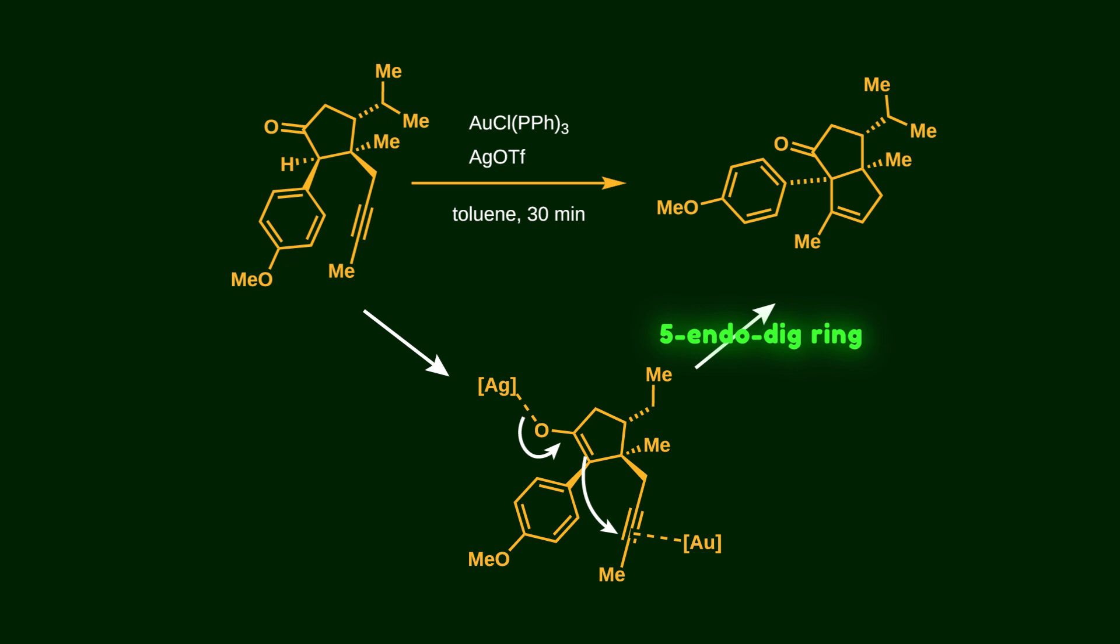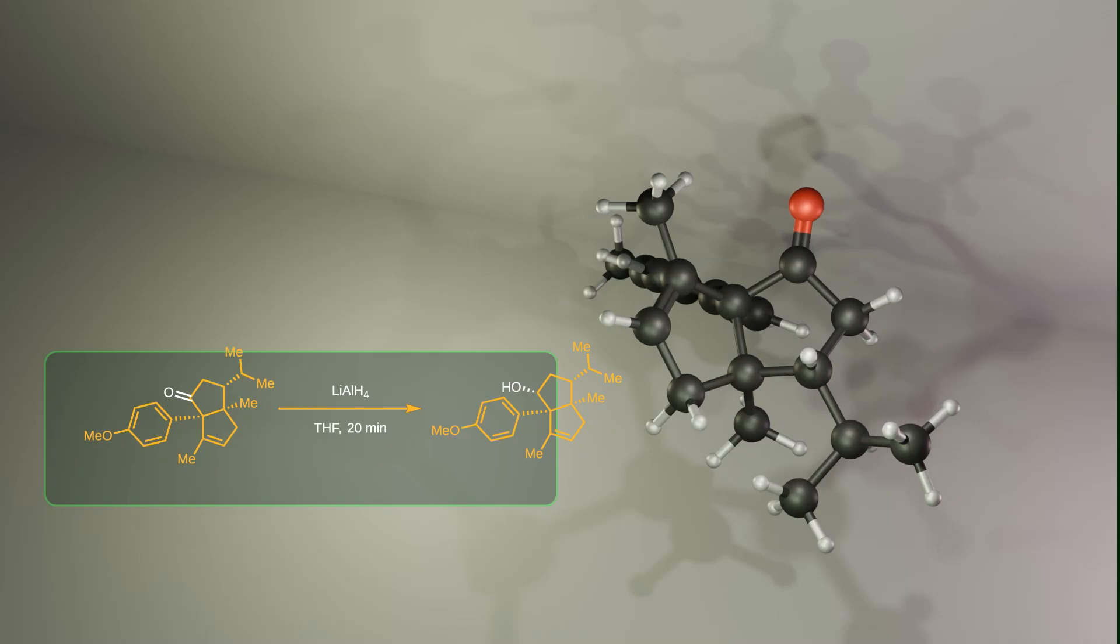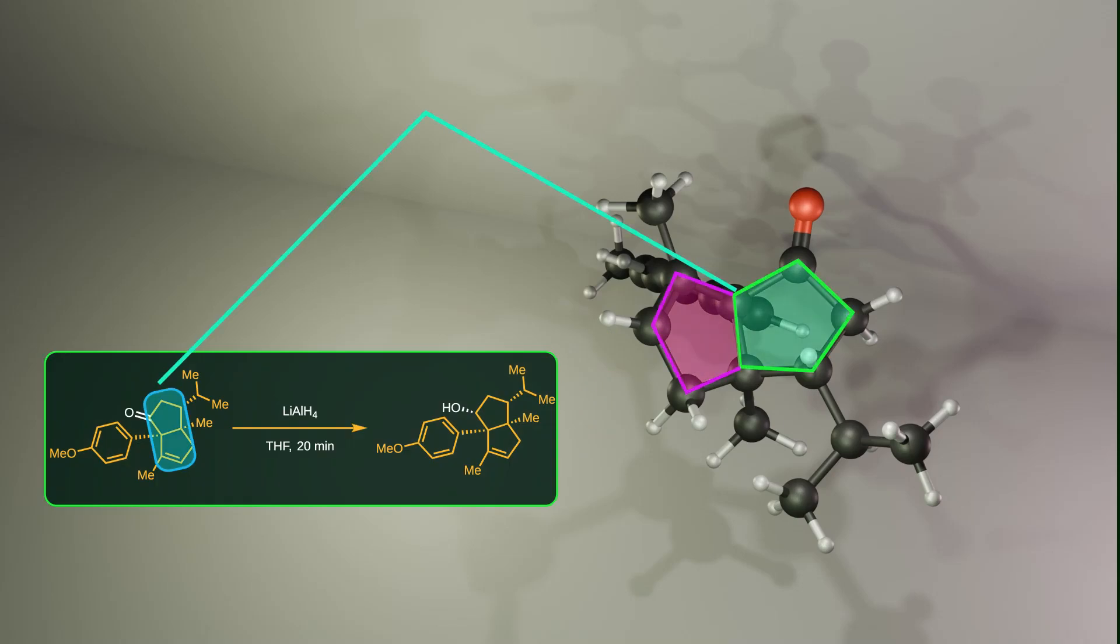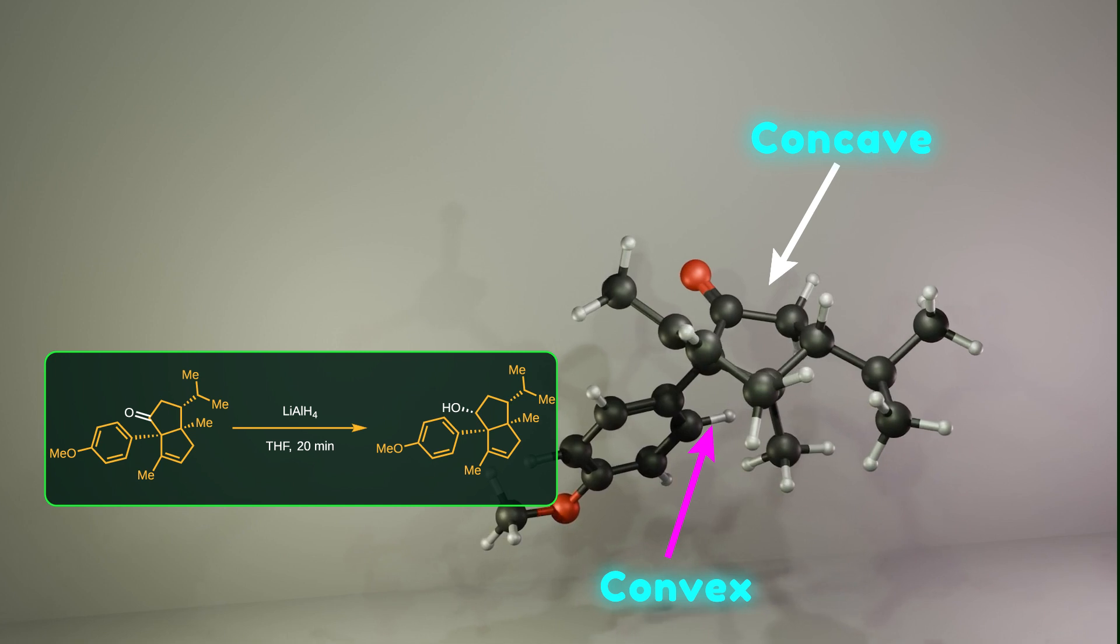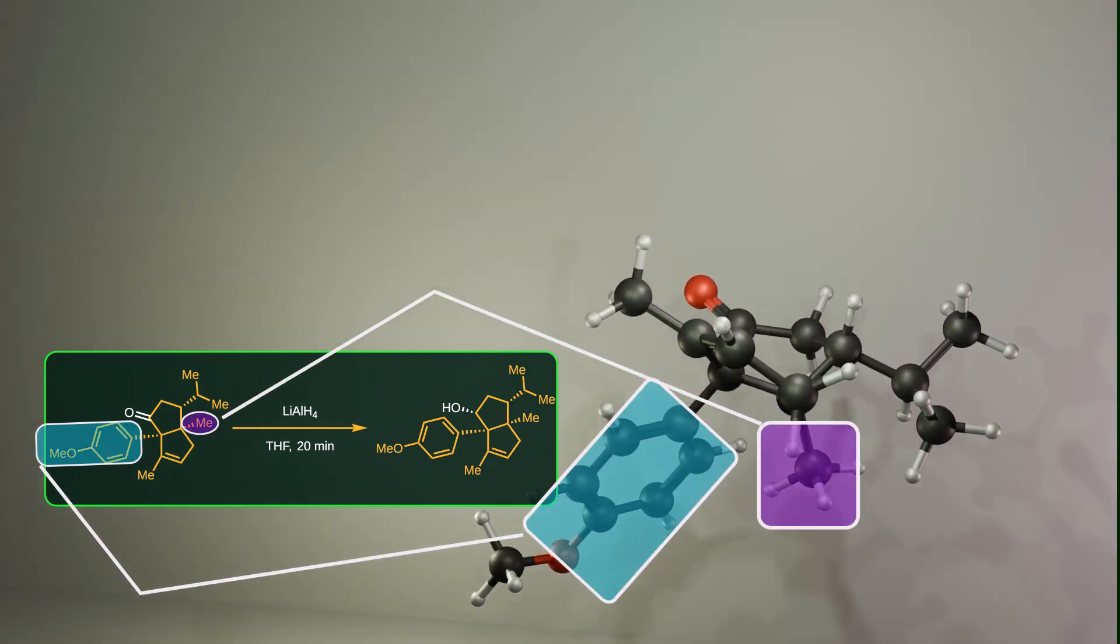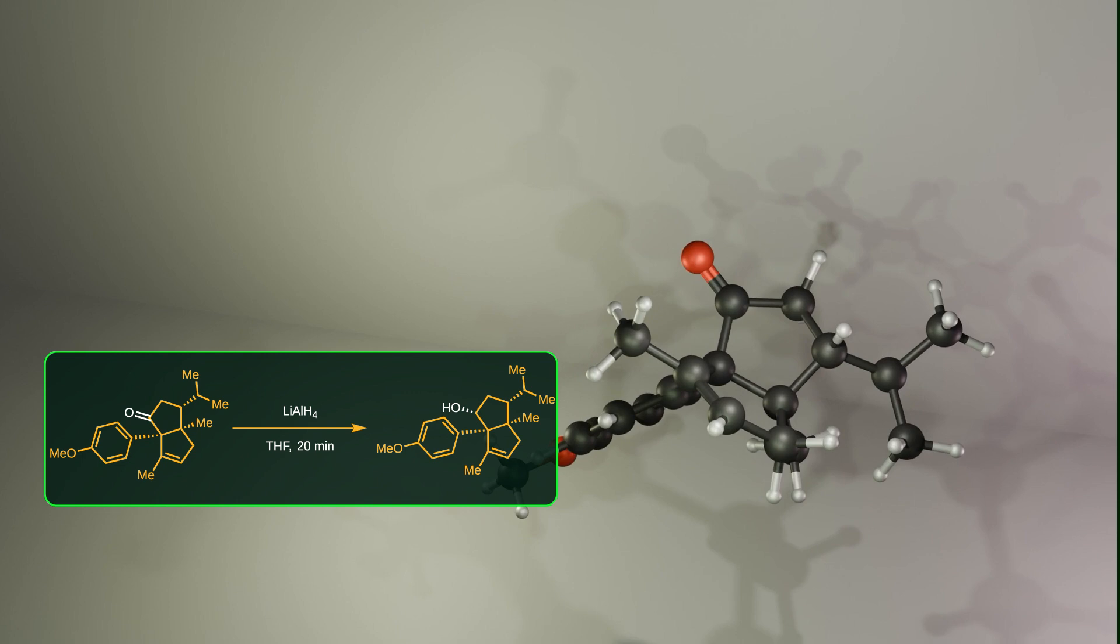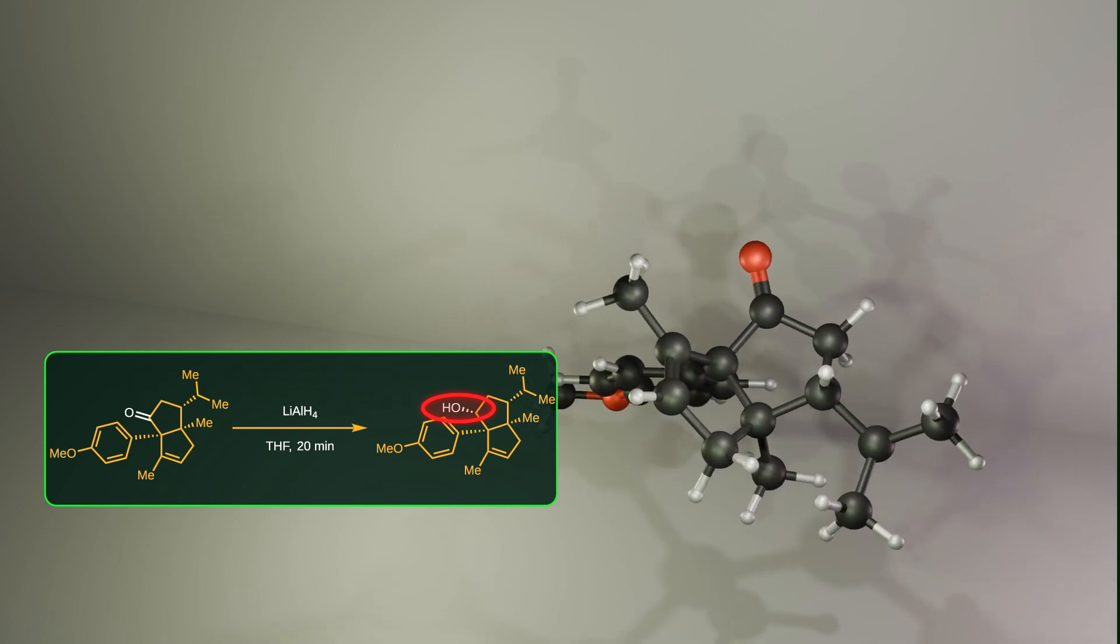Next, the carbonyl group is reduced by lithium aluminum hydride. If you look at the cis conformation of the two fused five-membered rings, the curved shape creates convex and concave faces at the ring junction. The aromatic ring and the methyl group block the convex face, so the nucleophile approaches from the concave face instead. Because of that, the resulting hydroxyl group ends up positioned below the plane.